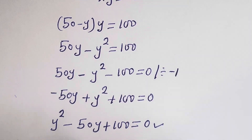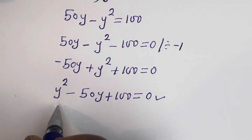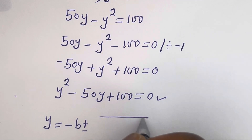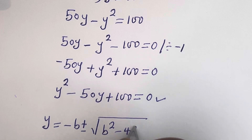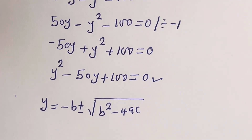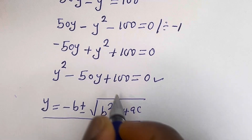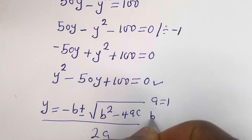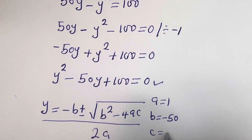This is a quadratic equation. Let's solve this using the quadratic general formula: y is equal to minus b plus or minus the square root of b squared minus 4ac, all over 2a. From this equation, a is equal to 1, b is equal to minus 50, c is equal to 100.